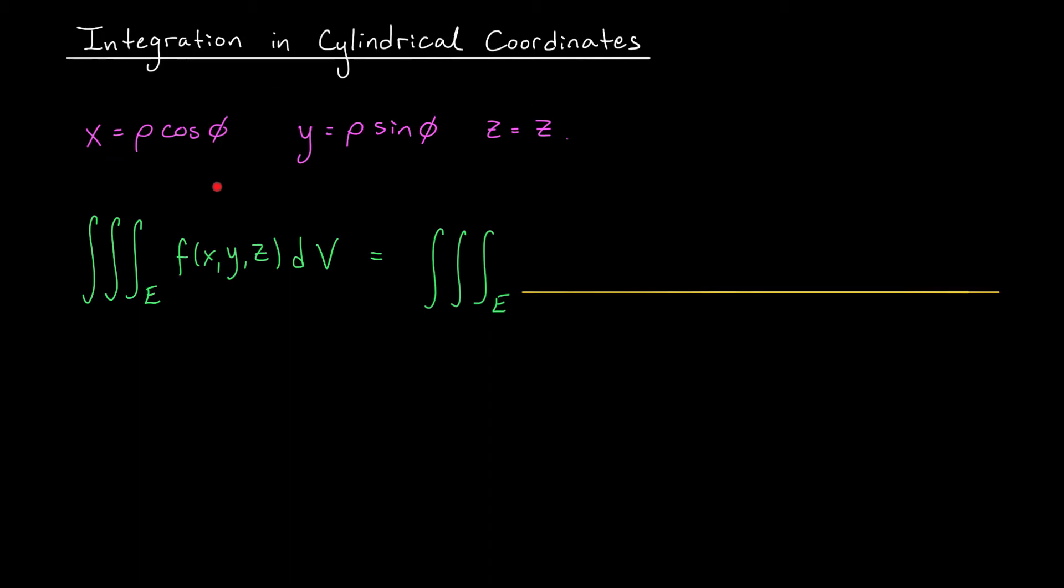We're going to replace them with their expressions in terms of rho, phi, and z. So x is going to become rho cos phi, y is going to become rho sin phi, and z doesn't change.